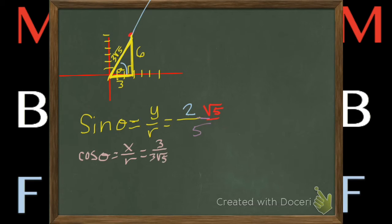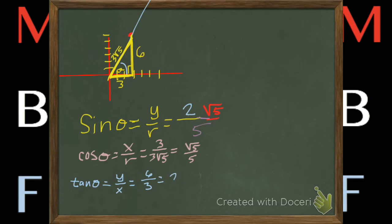Okay. So then the cosine of theta is x over r, which is three over three root five, which reduces and rationalizes to root five over five. My tangent from previous page is y over x, which is six over three, and that reduces to two.